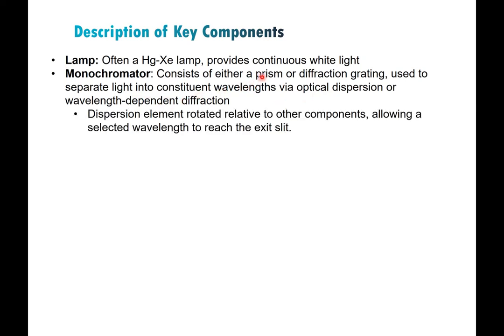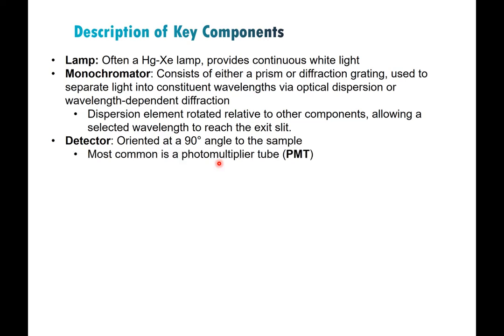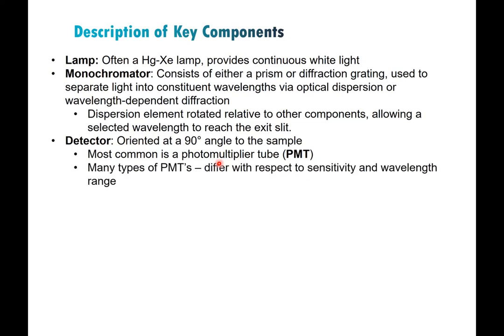The grating or prism is rotated relative to the other components to determine which wavelength actually reaches the exit slits — that noise you hear is the grating moving to direct the correct wavelength out. The detector is 90 degrees relative to the excitation, on one side of the sample. The most common type is a PMT — photomultiplier tube — and that's the type we have on Flora One and Flora Two. Different PMTs differ with respect to sensitivity and the range of wavelengths they can detect. The one on Flora One is an R928, one of the most common found in fluorometers; Flora Two has a different one that detects a wider range.